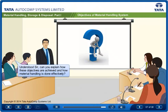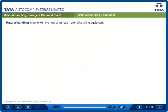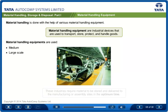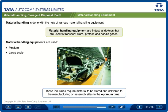Can you explain how these objectives are achieved and how material handling is done effectively? Material handling is done with the help of various material handling equipment. Material handling equipment are industrial devices that are used to transport, store, protect and handle goods. This equipment is used mainly in medium and large scale industries which require material to be stored and delivered to the manufacturing or assembly sites in the optimum time.